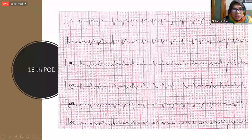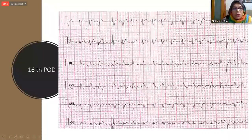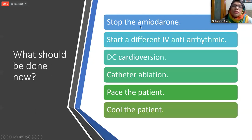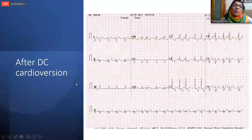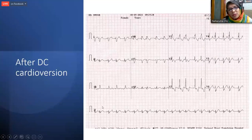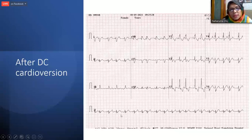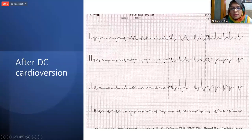Now we considered what to do next — stop amiodarone, start a different IV antiarrhythmic, cardiovert, catheter ablation (less likely in small children and post-operative cases), or pace the patient. We attempted cardioversion but unfortunately the rhythm remained irregularly irregular. The heart rate was now around 100, with abnormal P axis and morphology and persistent RBBB pattern.